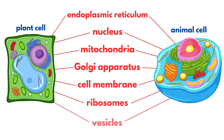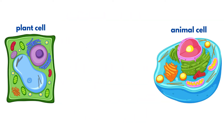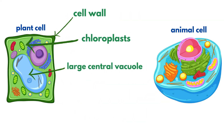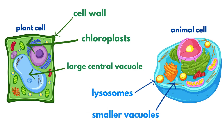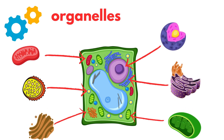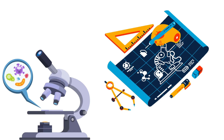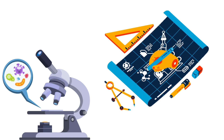So, while plant and animal cells share many organelles, they also have their unique features. Plant cells are equipped with a cell wall, chloroplasts, and a large central vacuole, while animal cells have lysosomes and smaller vacuoles. These differences reflect the distinct roles each type of cell plays in nature. Now that you've learned about the key organelles in plant and animal cells, why not explore further by examining cells under a microscope or creating a model?